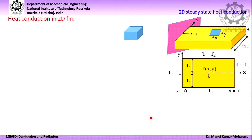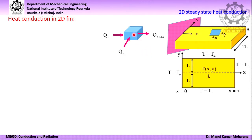We consider this elemental volume on which we will go for the energy balance. From the left face, heat enters into this volume by means of conduction — let it be qx, that is heat conduction in the x direction. Heat leaving from the opposite face equals qx plus delta x, where delta x is the dimension along the x direction. Similarly, in the y direction, heat enters into this volume by conduction as qy, and heat leaves as qy plus delta y, where delta y is the dimension in the y direction. There are two more surfaces — the top surface and bottom surface — from which heat transfer takes place by means of convection to the ambient fluid. We denote this total heat going from these two surfaces by means of convection as qc.